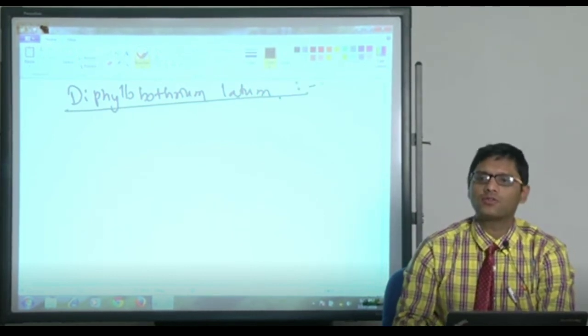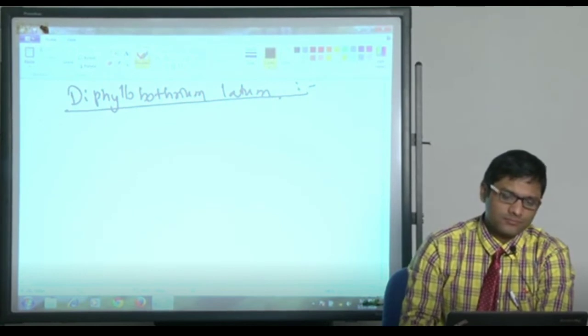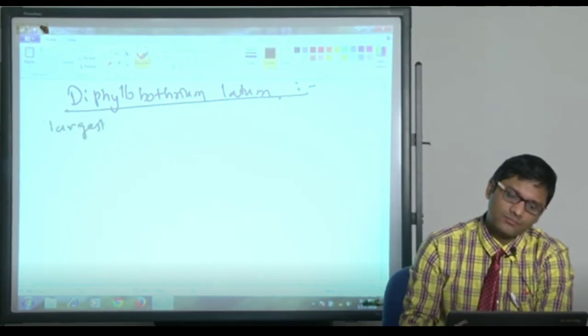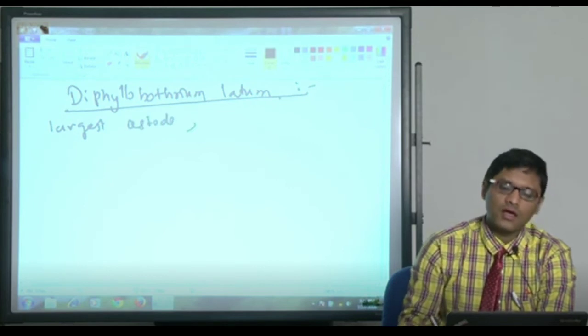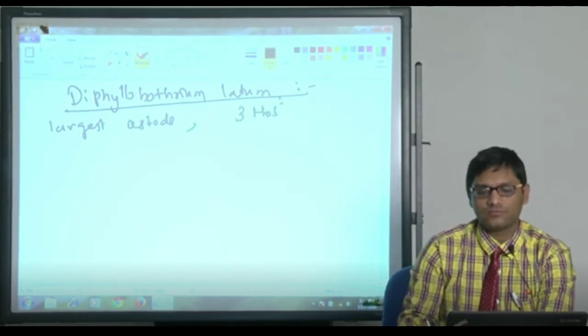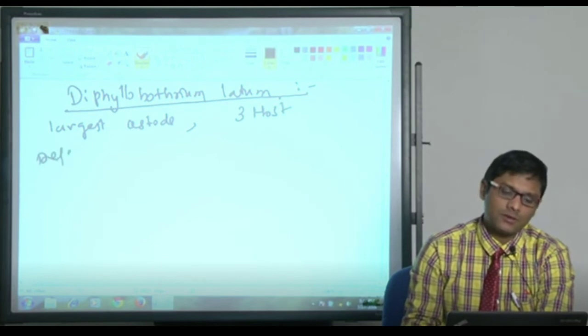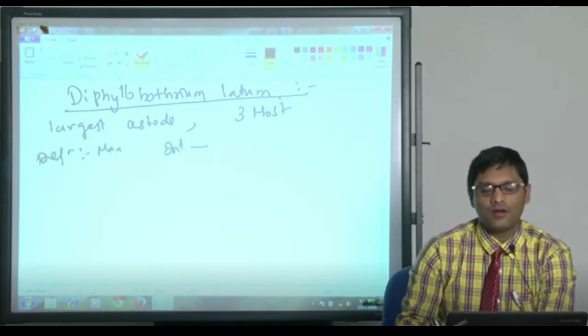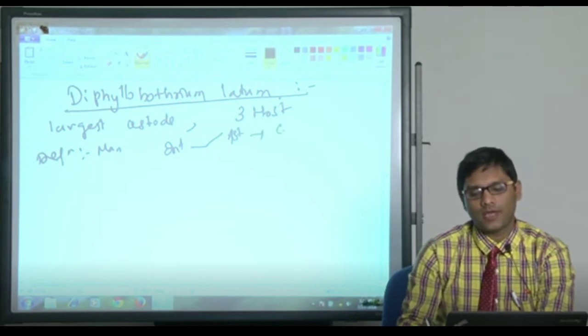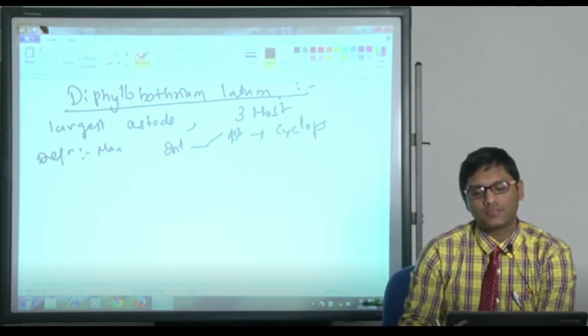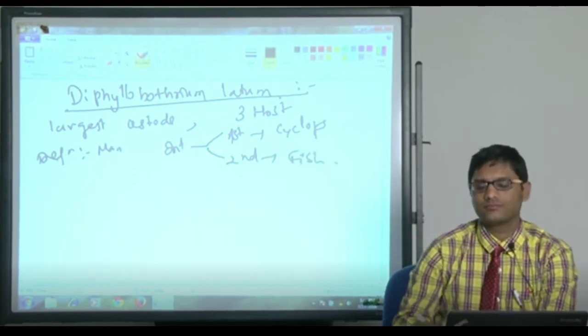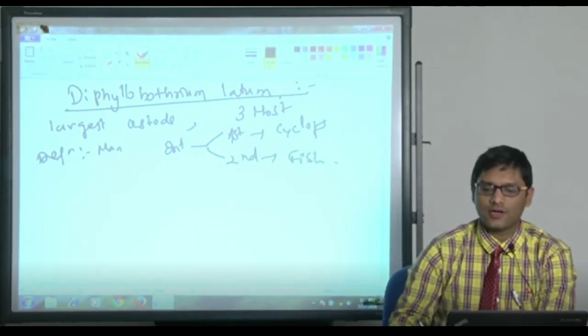Then Diphyllobothrium latum. They say it is the largest cestode and has three hosts: definitive host is man, intermediate hosts - first intermediate host is Cyclops, second intermediate host is fish. It is also called fish tapeworm.